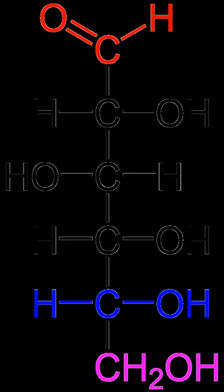Catabolism is the metabolic reaction which cells undergo to break down larger molecules, extracting energy. There are two major metabolic pathways of monosaccharide catabolism: glycolysis and the citric acid cycle. In glycolysis, oligo- and polysaccharides are cleaved first to smaller monosaccharides by enzymes called glycoside hydrolases. The monosaccharide units can then enter into monosaccharide catabolism. A 2-ATP investment is required in the early steps of glycolysis to phosphorylate glucose to glucose-6-phosphate and fructose-6-phosphate to fructose-1,6-bisphosphate, thereby pushing the reaction forward irreversibly. In some cases, as with humans, not all carbohydrate types are usable as the digestive and metabolic enzymes necessary are not present.